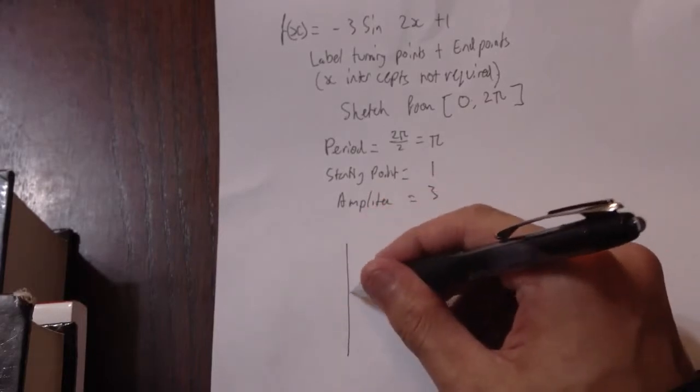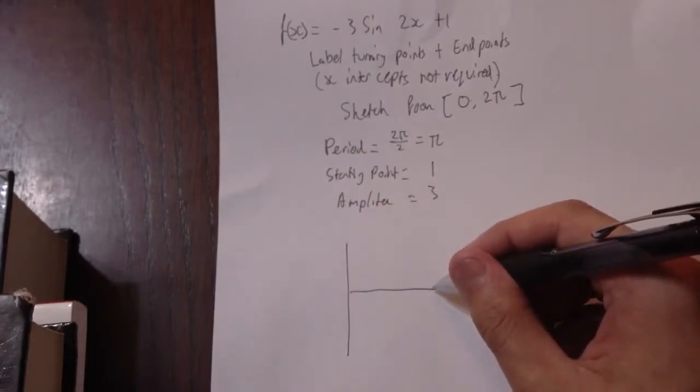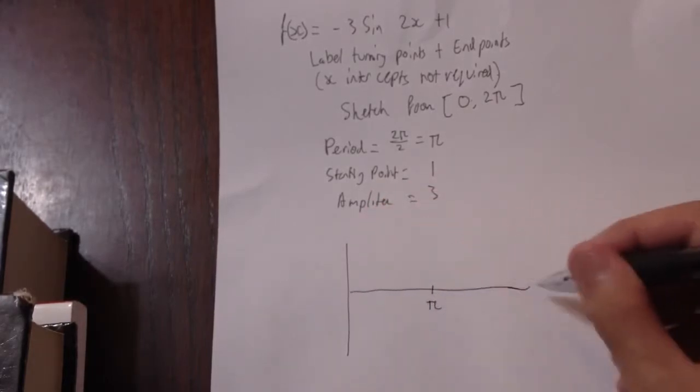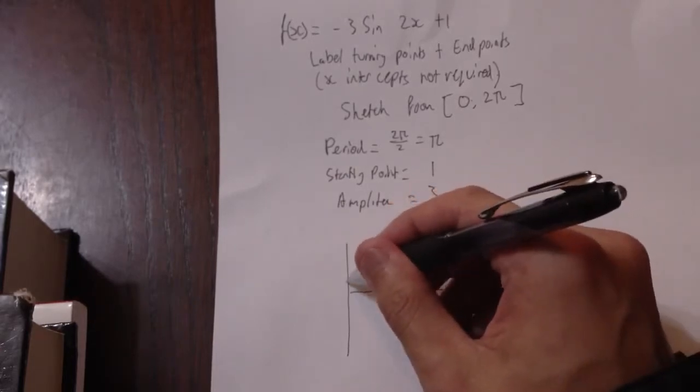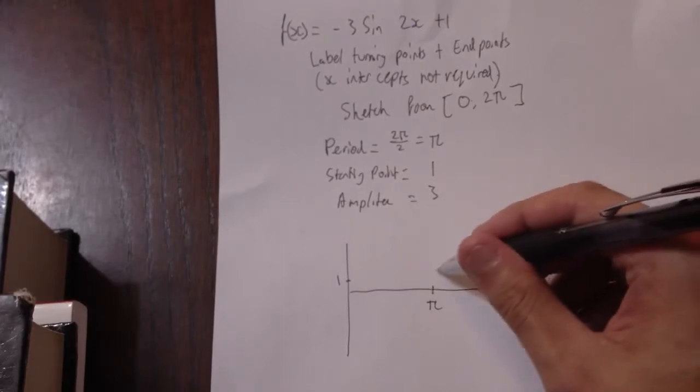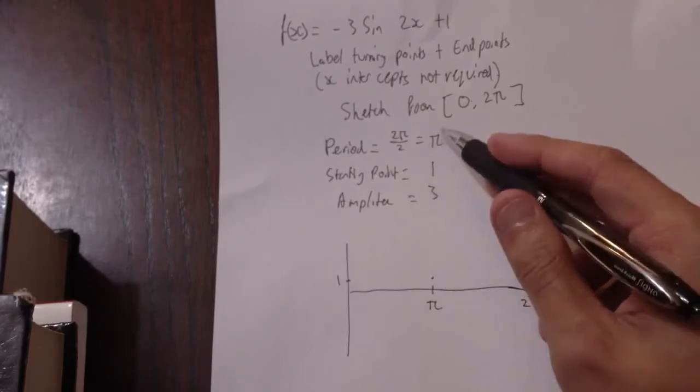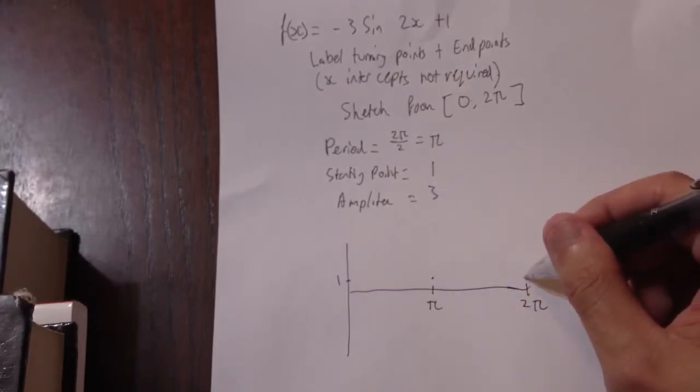So now we can draw it. π, 2π. So we know it starts at 1. We know by the time it reaches π, it should have completed one period, so there will be two periods by here.